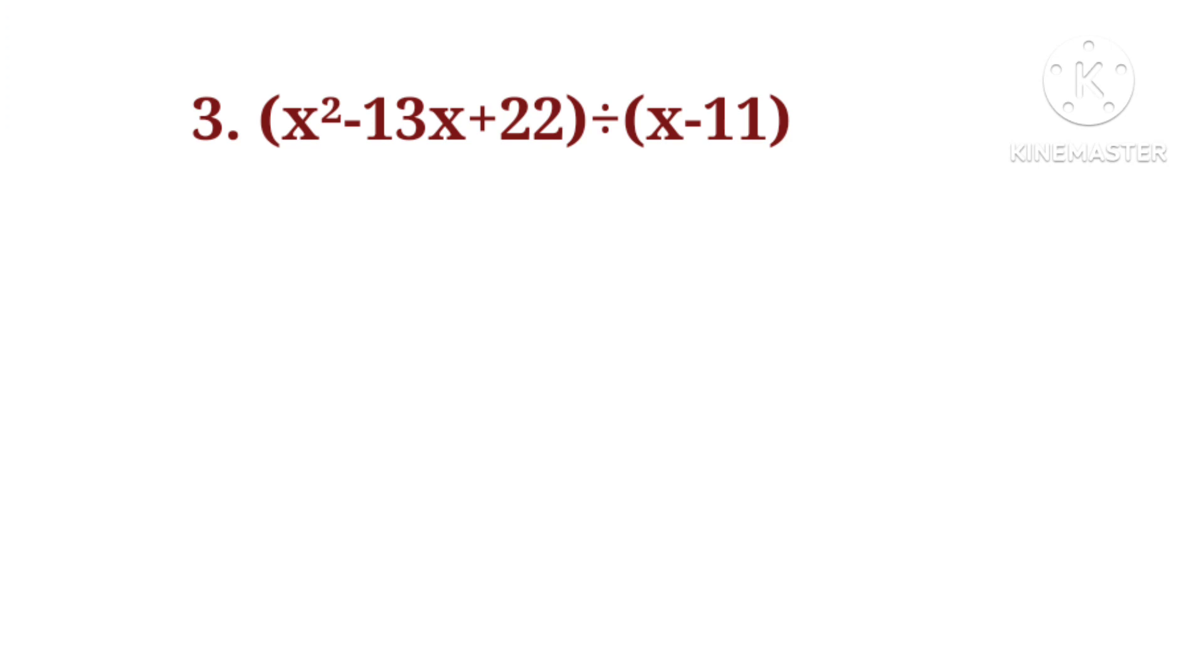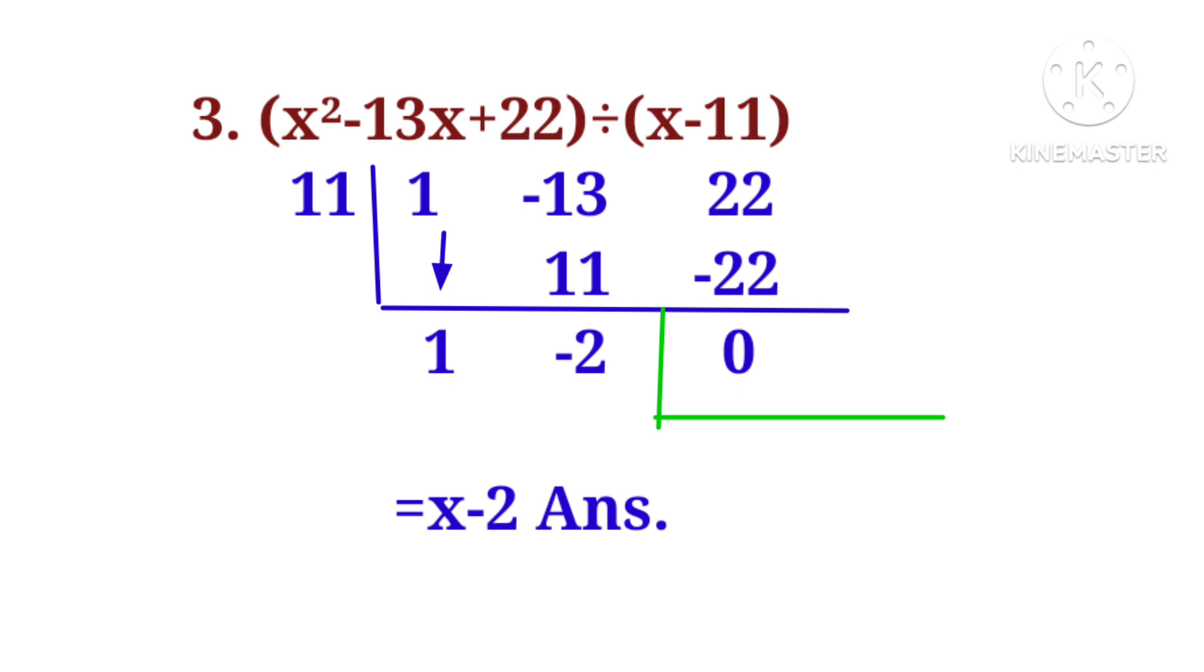Question number 3: x square minus 13x plus 22 divided by x minus 11. x minus 11 is equal to 0, so x is equal to 11. Now, coefficient of x square is 1, coefficient of x is minus 13, and constant term is 22.